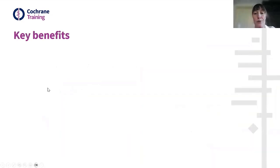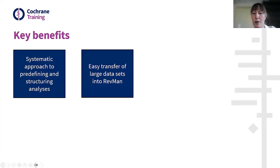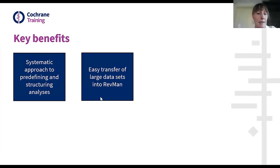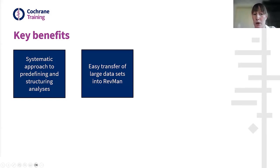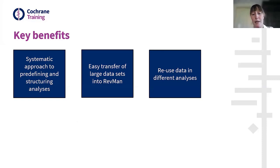There are a lot of key benefits to working with the study-centric data workflow. First, choosing to use study-centric data management will help authors think more systematically about how to structure their analysis earlier in the process. This process also allows easy transfer of large data sets into RevMan through import via CSV files, which can be generated by Covidence, Excel, or any other tool that generates CSV files adhering to the RevMan template, which is publicly available. Data can be reused for different analyses as data is stored at the study level and not the analysis level, reducing time and the risk of entry errors since data is entered only once.